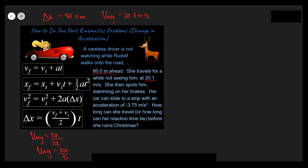Let's continue with the problem — we want to read and stop when we get to something we can translate into physics variables. It says she spots him and slams on her brakes. This is your transition right here — this is really important. I'm going to label this as the transition from Part 1 to Part 2. My advice is to look for those transition words or sentences that give you a clue there is a before and an after.